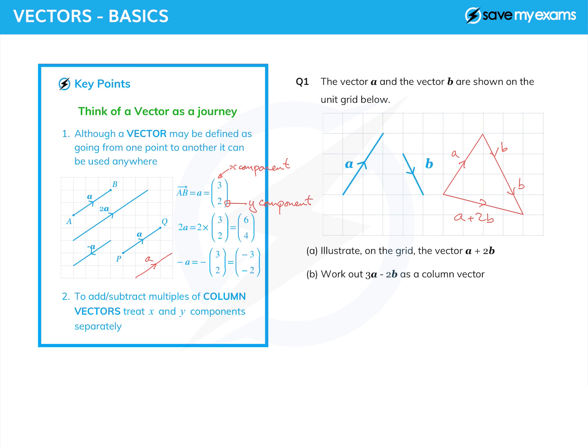So that's part a. And then part b: well, 3a minus 2b, we just do it. 3a minus 2b—well, first of all, I suppose we need to see what the two vectors are.